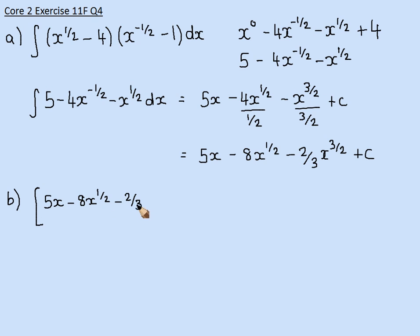Now, of course, if we're doing a definite integral with limits, that means my constant is going to disappear, so I don't need that anymore. Between 4 and 1. So, substitute my values in. Well, when x is 4, that's going to be 20. 4 to the power of 1 half is the square root of 4. That's 2 times 8 is 16.